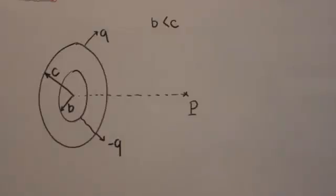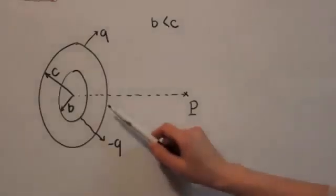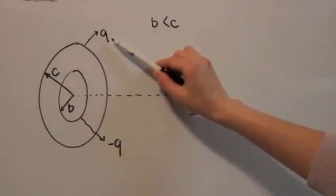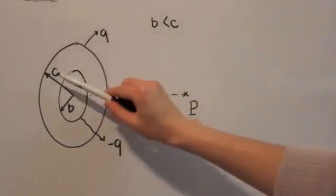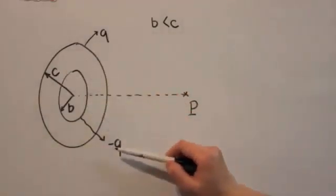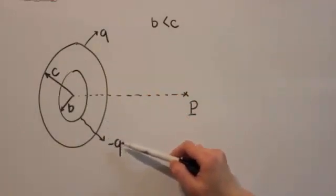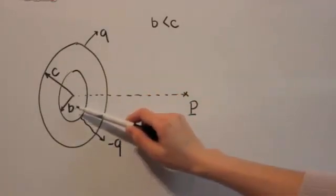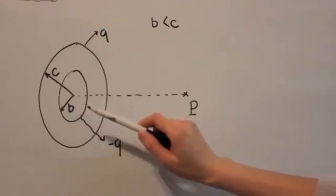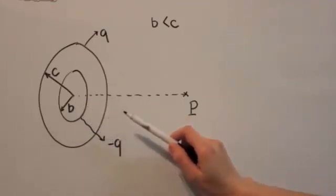Let's start by summarizing our problem. Two uniformly charged rings are arranged as follows: The bigger ring has a total charge Q with radius C, and the small ring has total charge minus Q with radius D. They are concentric and co-planar.